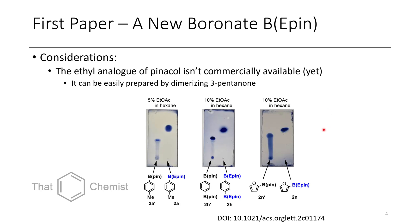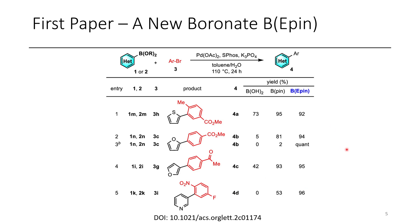If you're in medicinal chemistry or industry working on target-oriented synthesis, it's definitely worth checking this out because it could solve a problem you're having. The scope shows Suzuki reactions with B-pin or B-E-pin groups, giving much higher conversions with the B-E-pin group. Note that the ethyl pinacol isn't commercially available — you have to make it using a pinacol coupling reaction with 3-pentanone, which is commercially available and dirt cheap, with lit preps you can follow.